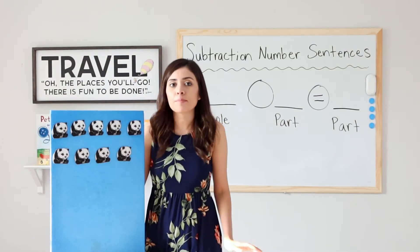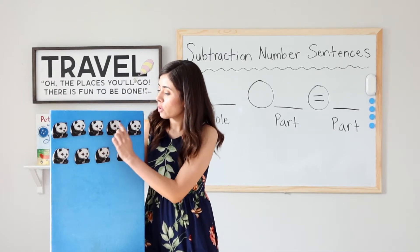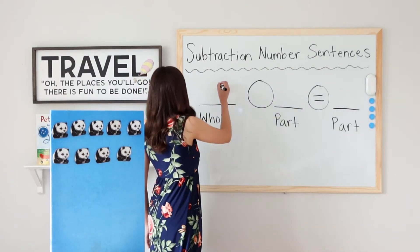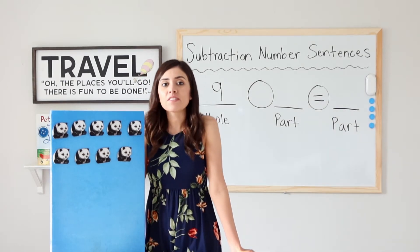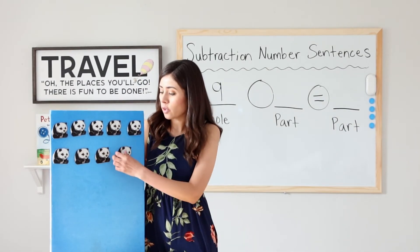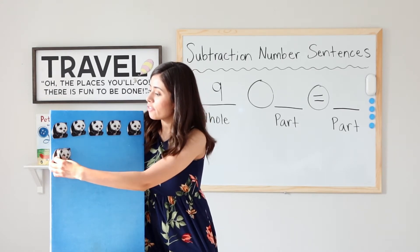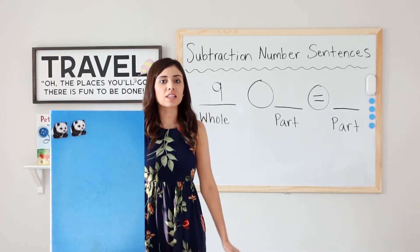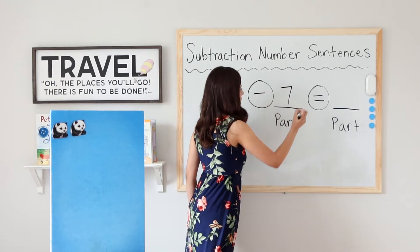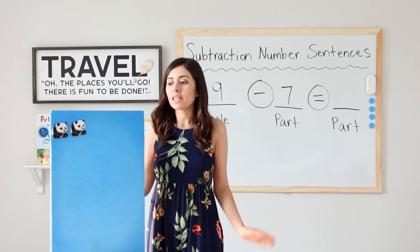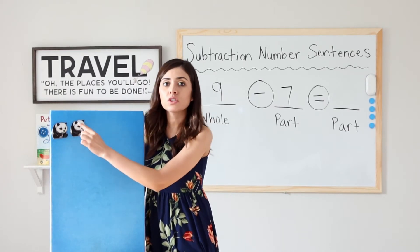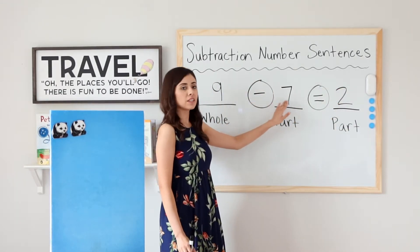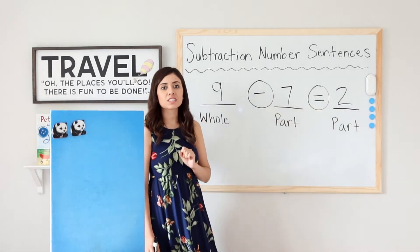So now I have 9 pandas climbing up a tree. 1, 2, 3, 4, 5, 6, 7, 8, 9. Let's go ahead and write our whole down. 9. 7 decide it's time to go to sleep. Let's go ahead and take away 7. 1, 2, 3, 4, 5, 6, 7. So we took away 7. Let's write that down. Minus 7 equals what? How many pandas do I have left? 1, 2. 9 minus 7 equals 2. 2 is my difference. Great job.